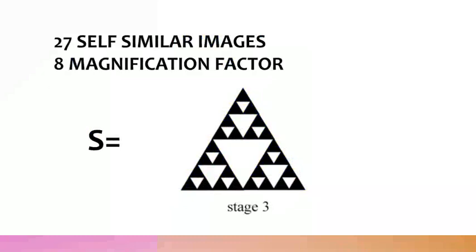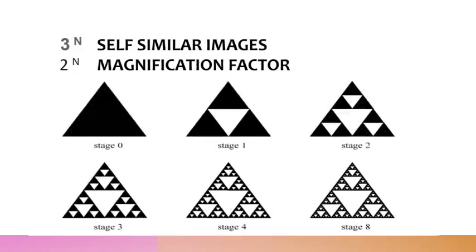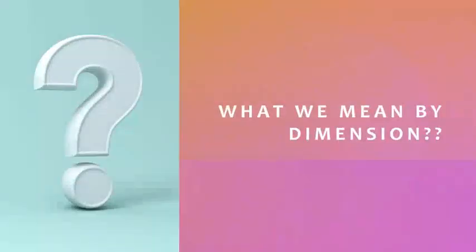In general, we may divide S into 3 to the power N self-similar pieces, each of which is congruent and each of which may be magnified by a factor of 2 to the power N to generate the entire figure. This type of self-similarity at all scales is a hallmark of the images known as fractals. To explain the concept of fractal dimension, firstly, we have to understand what we mean by dimension in the first place.